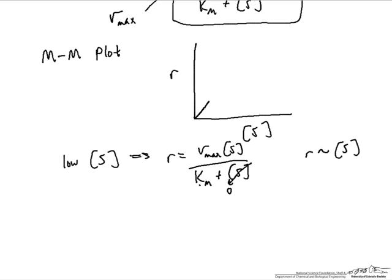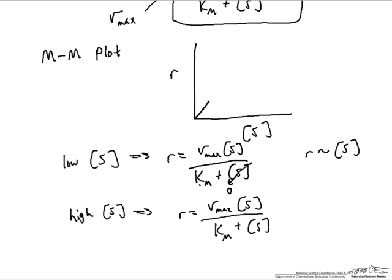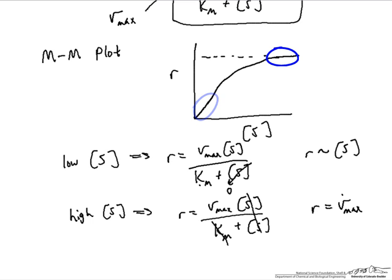At high concentration of S, the situation is different. If [S] gets high enough and approaches infinity, it will be higher than the Michaelis constant, so Km can be crossed out from the denominator. We see that the rate of reaction at high substrate concentration is independent of substrate concentration — the rate equals the constant Vmax. So we have a gradual transition from first-order behavior to zeroth-order behavior in terms of substrate concentration, with the maximum at Vmax.